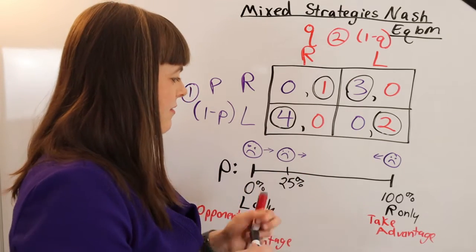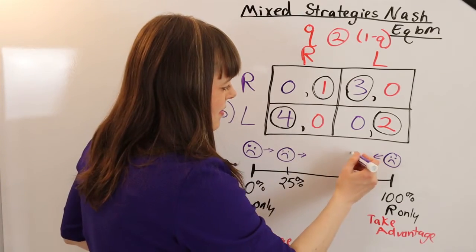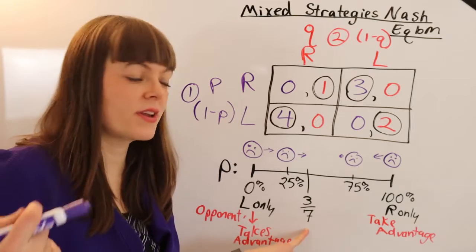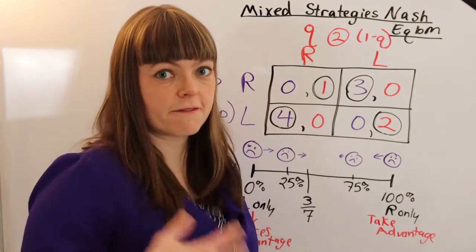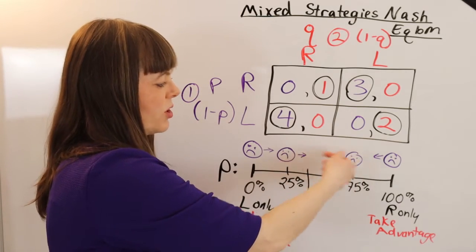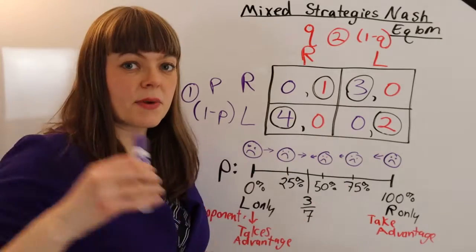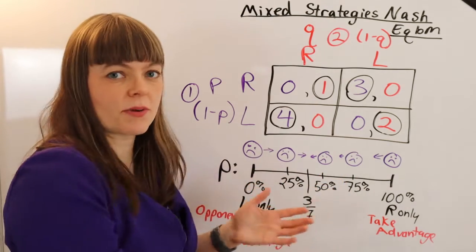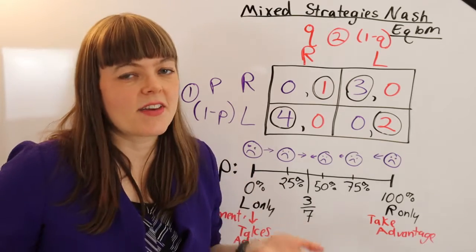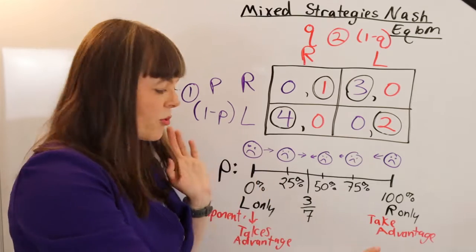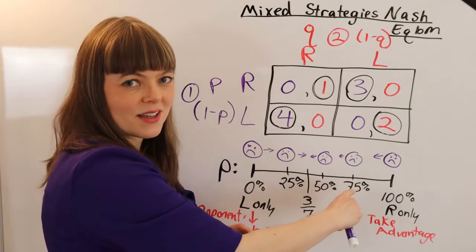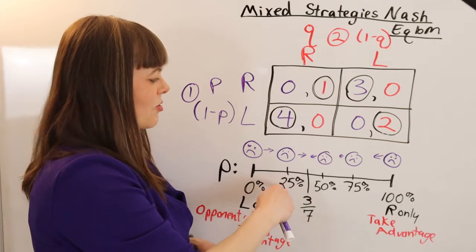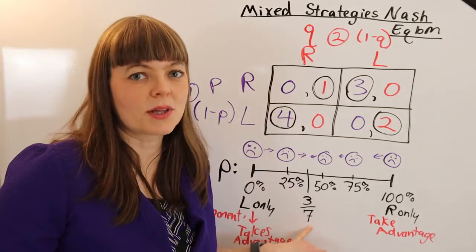The math tells us we should set p at exactly three sevenths. At the 50% line we're still not happy and wish we'd moved down. At any random point on this map, the other player has a best response of always going left or always going right, taking advantage of our bias — except at three sevenths. Every point above three sevenths makes us unhappy wishing p were lower; every point below makes us wish p were higher. Three sevenths is the equilibrium.